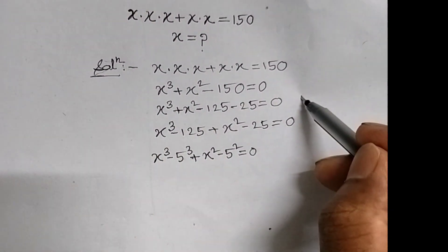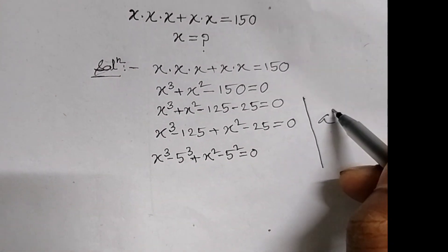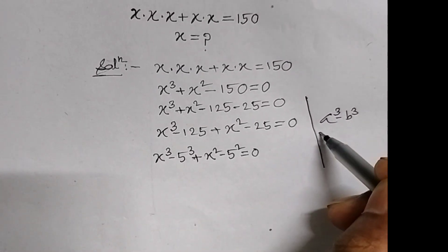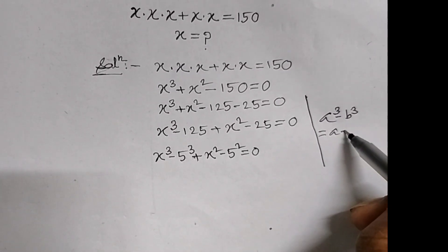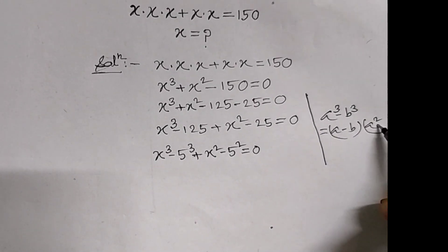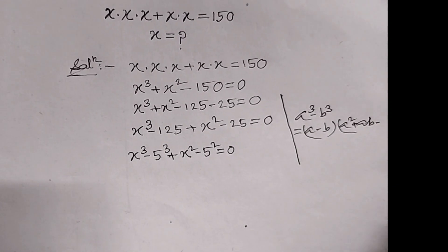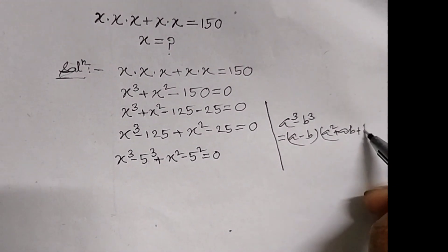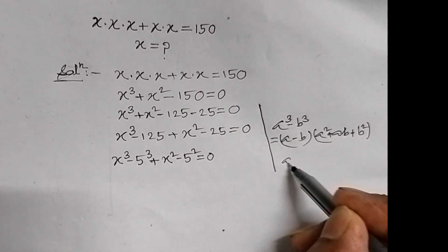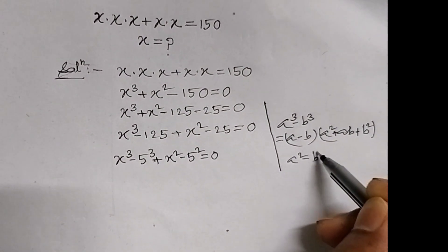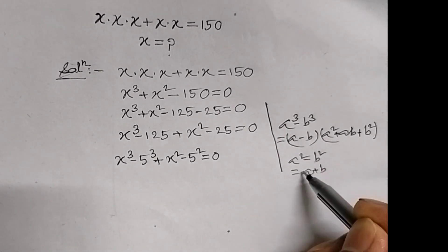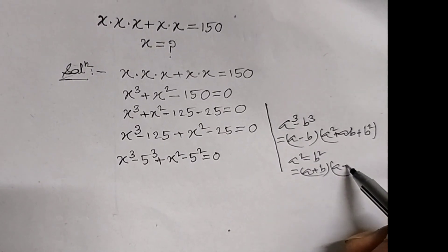Now in the next step, we use two formulas. One is a cube minus b cube equal to a minus b into a square plus ab plus b square. And the other formula is a square minus b square equal to a plus b into a minus b.